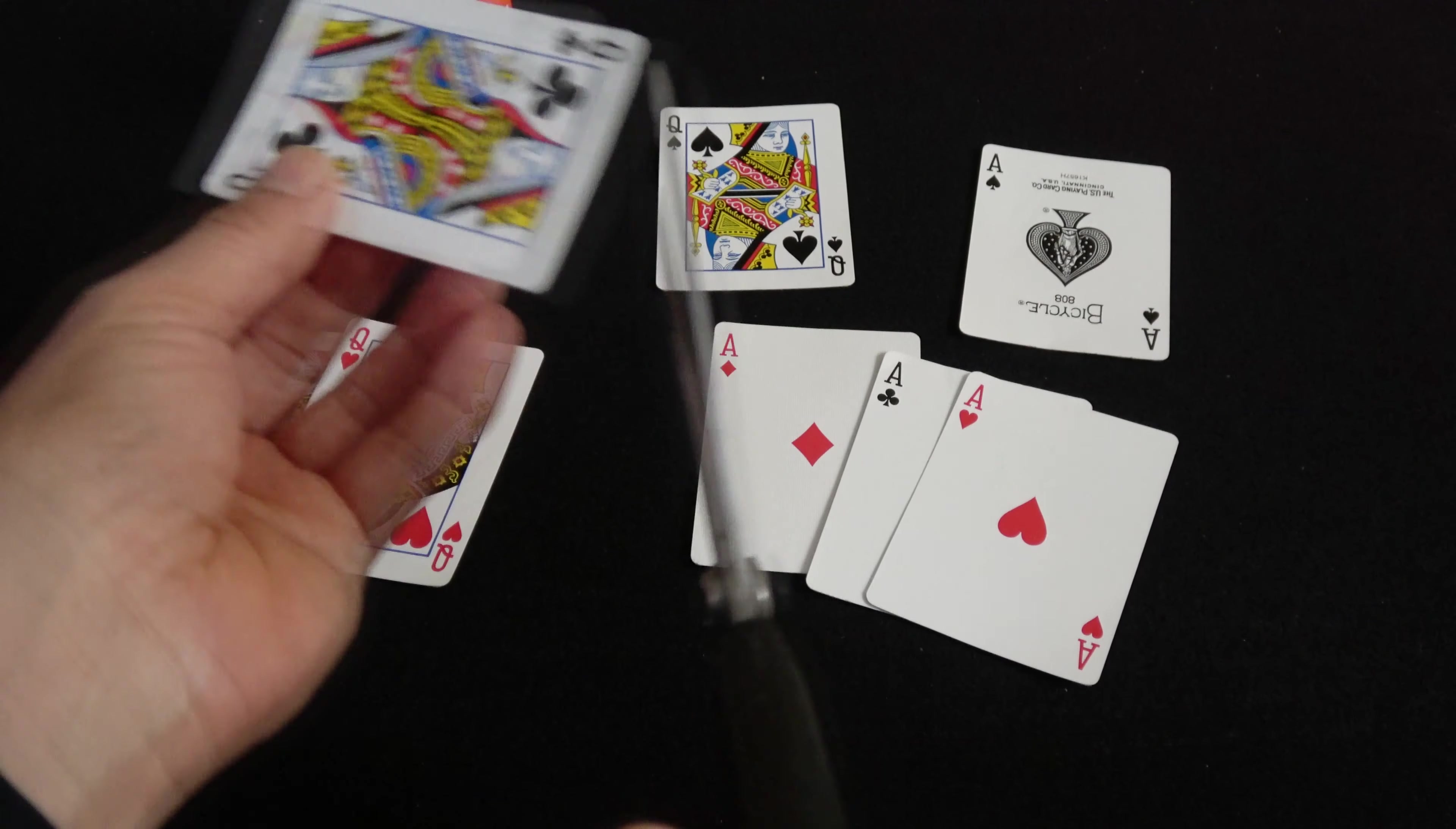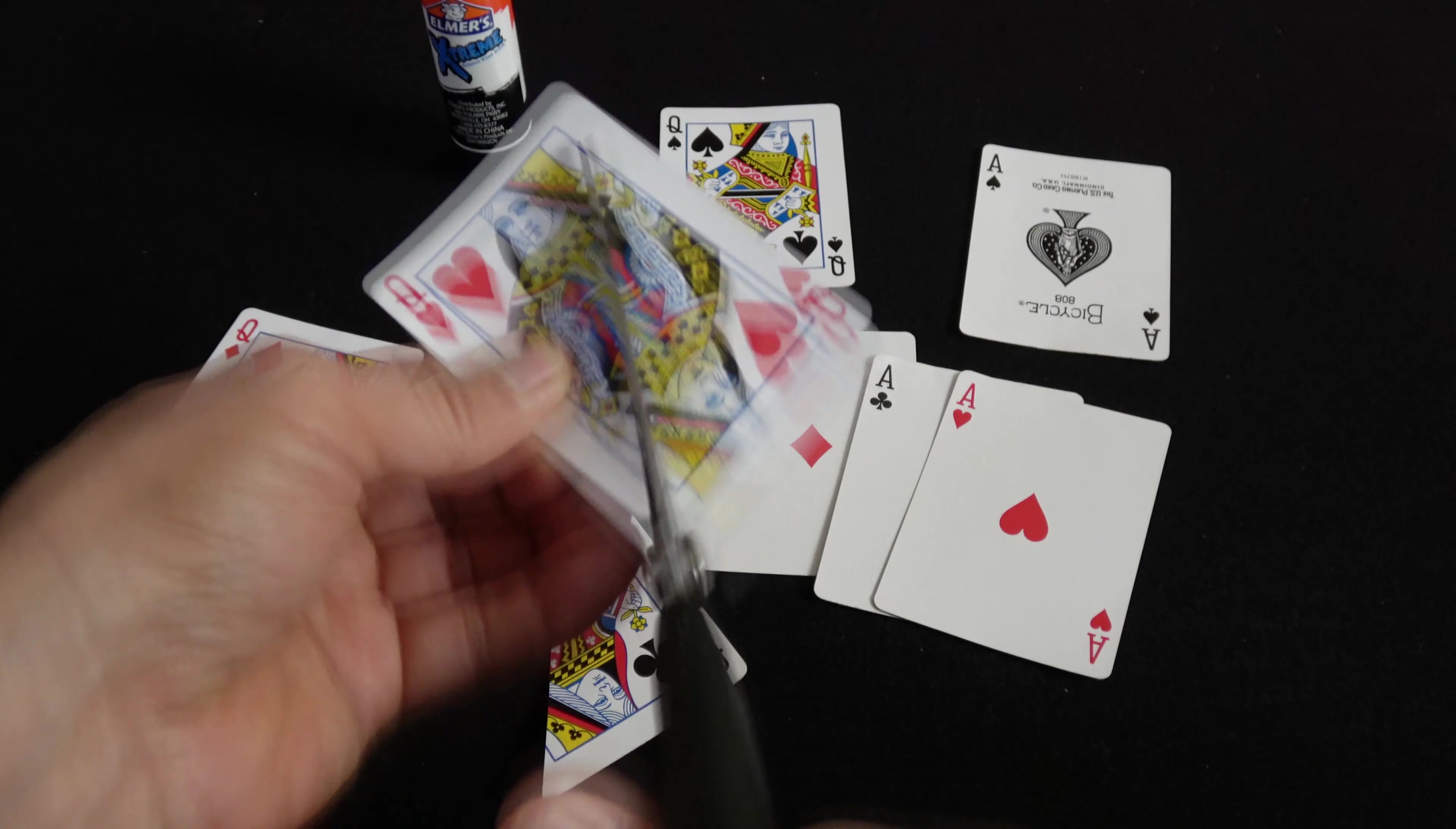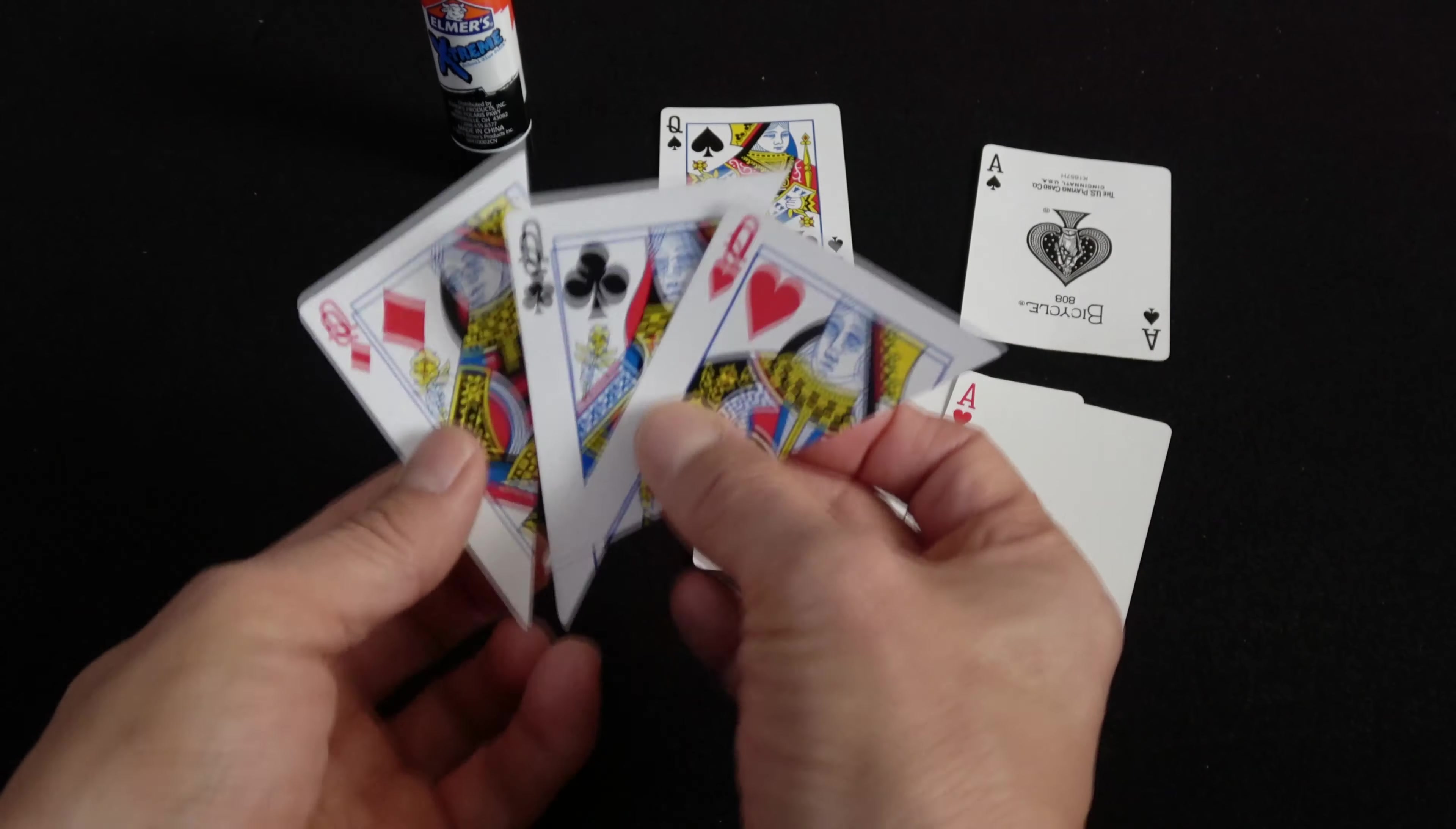To start, we're going to take three of the queens and cut them diagonally. You'll have three corner queens.